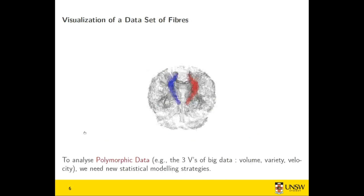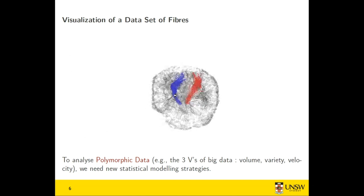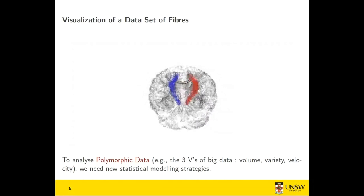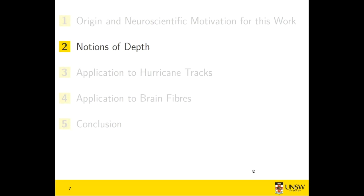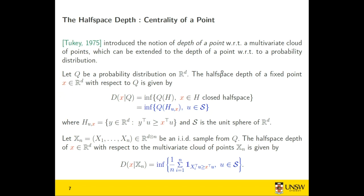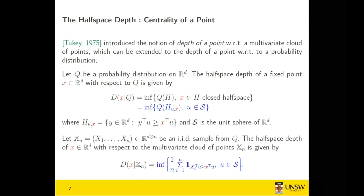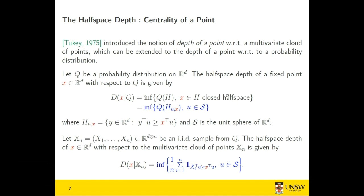These are the kind of data we had. For the two hemispheres, we have a set of 1,000 fibers connecting the brain stem at the bottom to the motor cortex at the top. To analyze this so-called polymorphic data, we need new statistical modeling strategies. I will start by explaining the notion of depth — this was the research topic of Pavlo Mozarovski when he arrived at INRIA in Brittany. He gave a presentation of what he was doing, and I thought it was a very good technique to generalize to brain fiber curves.